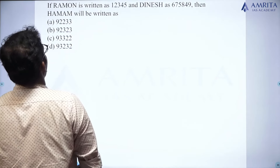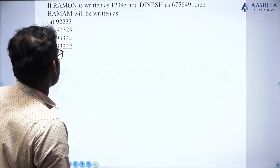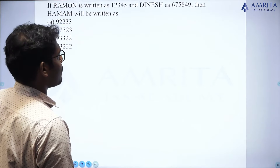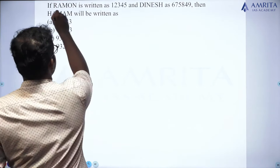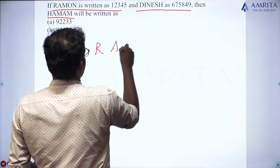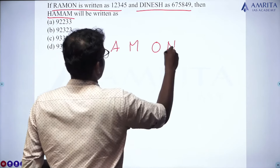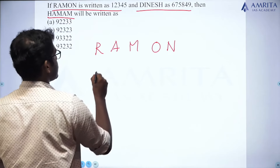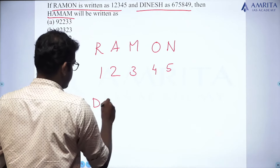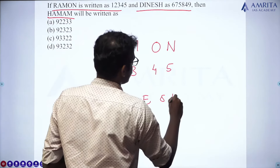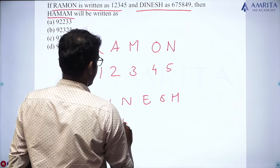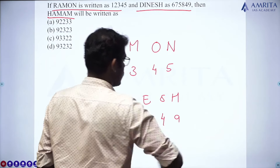The third question: If R, A, M, O, N is written as 1, 2, 3, 4, 5 and D, I, N, E, S, H — Dinesh is written as 6, 7, 5, 8, 4, 9. Then Hama will be written as what? Ramon is coded as 1, 2, 3, 4, 5 and Dinesh is coded as 6, 7, 5, 8, 4, 9.